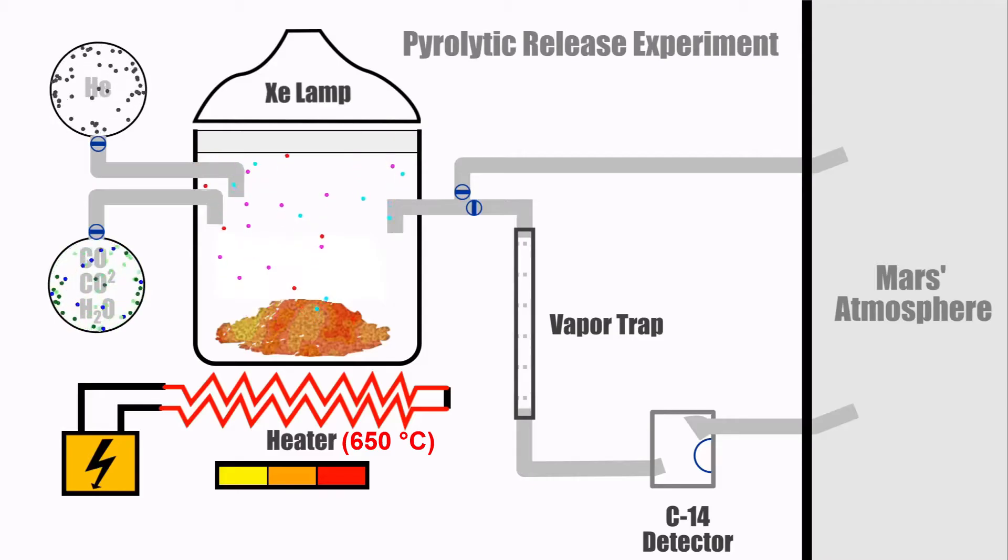The vapor products released by pyrolysis is collected in the chamber until it's purged by a stream of helium into a vapor trap, which traps heavy organic molecules like methane, but allows carbon dioxide and carbon monoxide to pass to the radioactive detector.